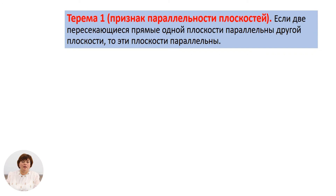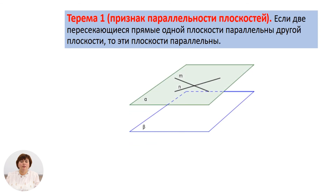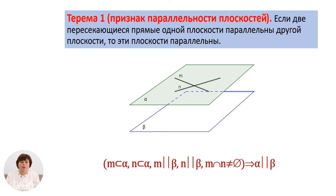Представим признак параллельности плоскостей. Если две пересекающиеся прямые одной плоскости параллельны другой плоскости, то эти плоскости параллельны. На рисунке мы видим плоскость α и β. В плоскости α у нас прямые M и N. Прямая M параллельна плоскости β, прямая N параллельна плоскости β, и прямые M и N пересекаются. Следовательно, плоскости α и β параллельны.